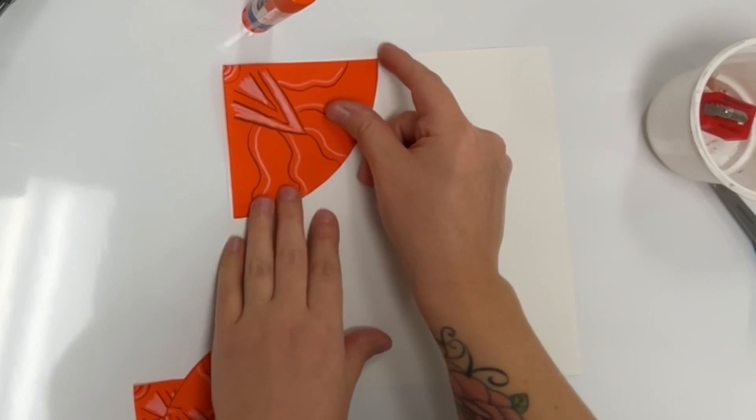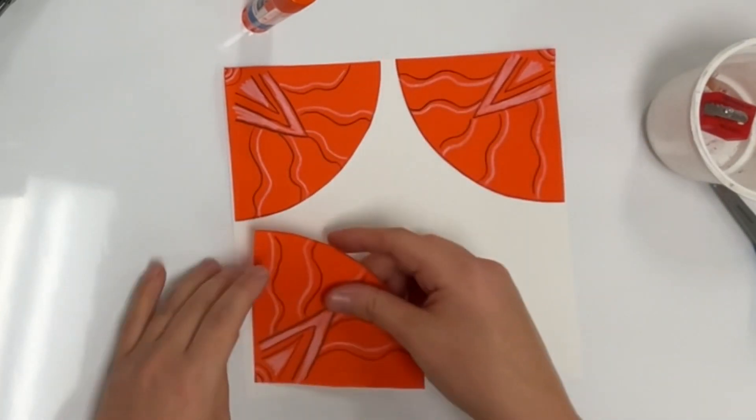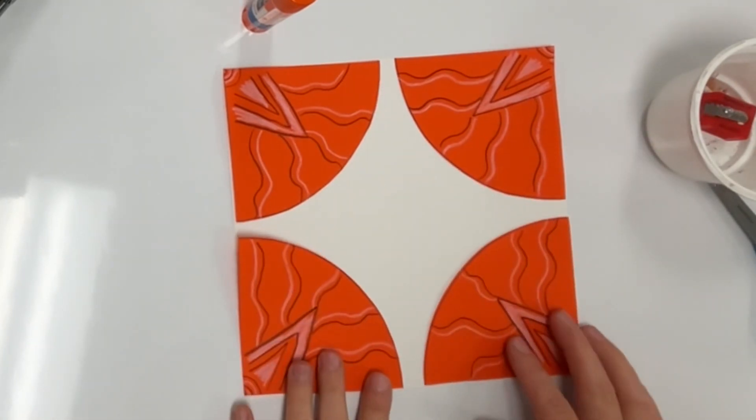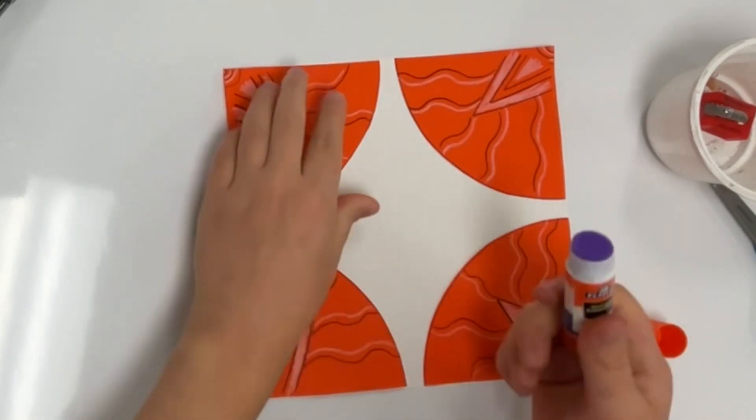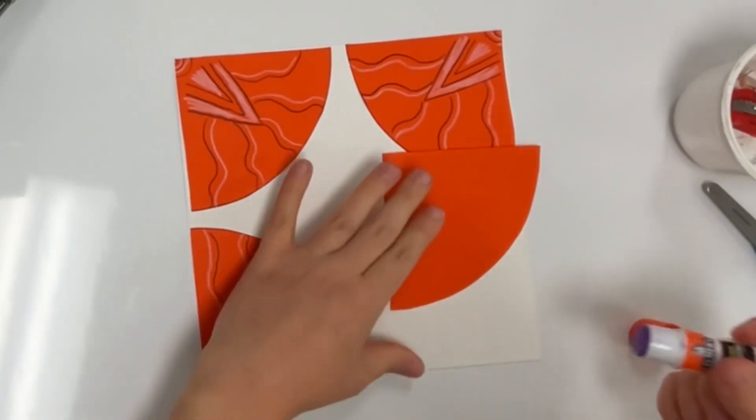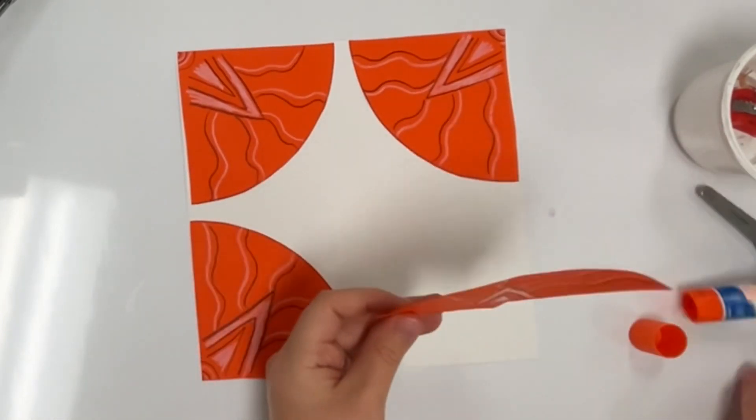Now I'm going to arrange my circle pieces onto my paper just like this. So one point in each corner just like that and then I will glue them down. Make sure to get them as straight and as close to the corners as you can so it's nice and neat and our mural works out.